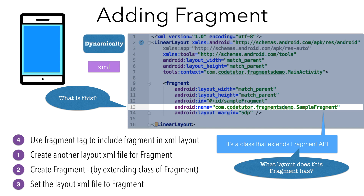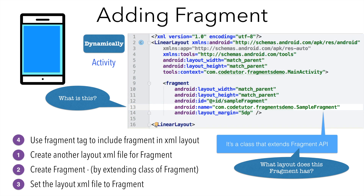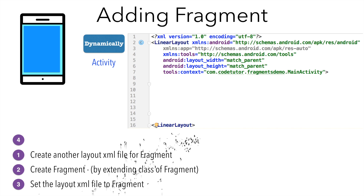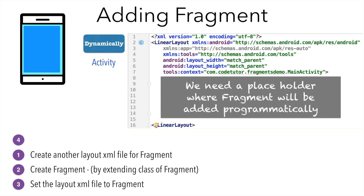Instead of using the XML file, we will be using an activity. To do that, we will have to modify certain things. But still, the first three steps — creating another layout, creating the fragment, and setting the layout to that particular fragment — all those things remain the same. However, the fragment tag that we are using in the linear layout file has to be removed, and instead of that, we need a placeholder which can actually host a fragment.